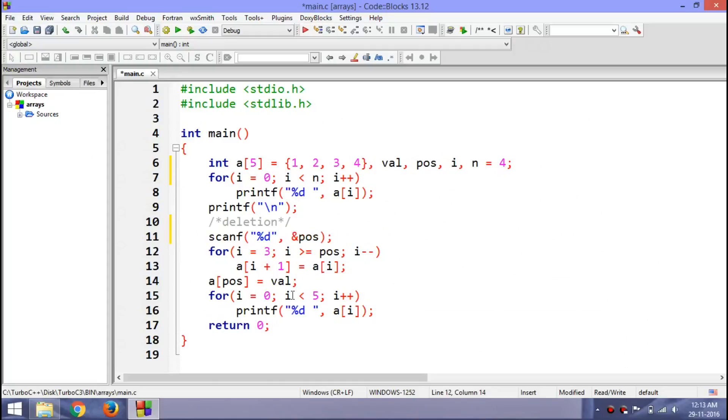Then I will start from pos, move towards n, incrementing the counter in each iteration. Then according to algorithm, I have to write a[i] equals to a[i+1] here. Then I don't need this line. Instead, I need to decrement the size of array after the loop has ended.